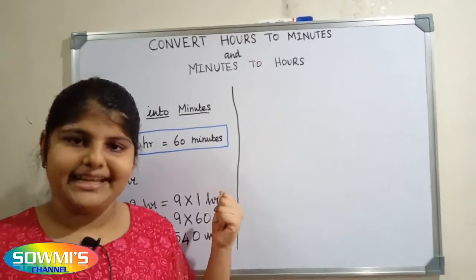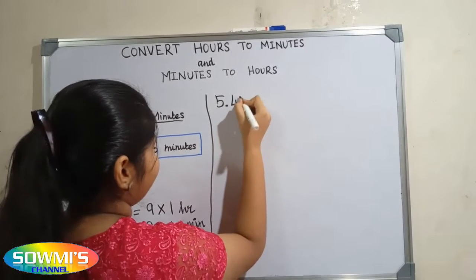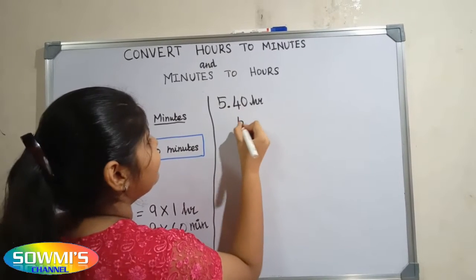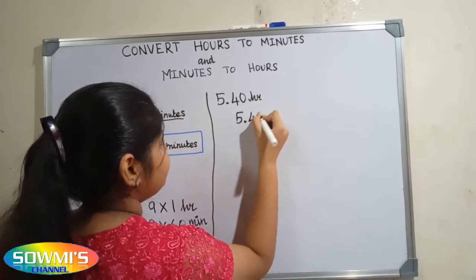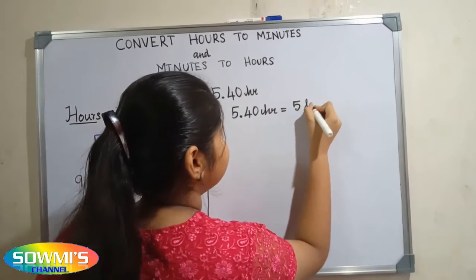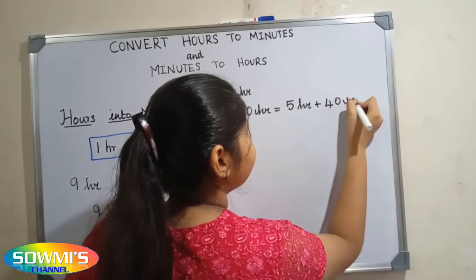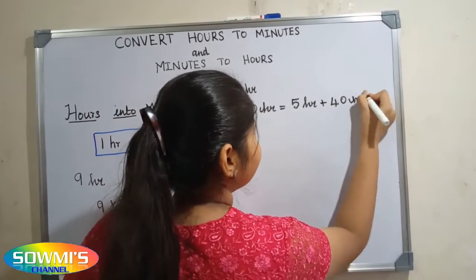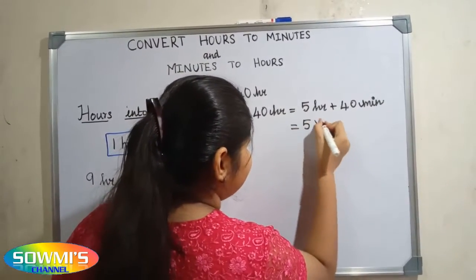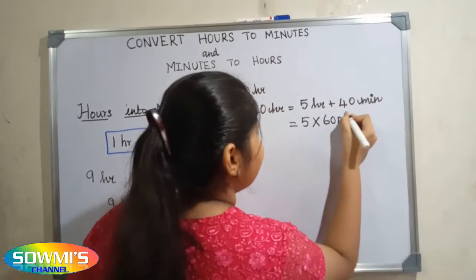Now we will take another example. 5.40 hours. 5.40 hours is equal to 5 hours plus 40 minutes.